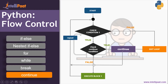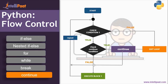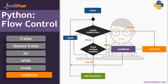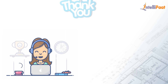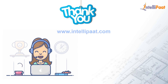Next we have the continue statement. The continue statement does not break the loop — it skips the current statement when the condition is true. Looking at the flowchart — start, check condition one. If true, check the continue condition. If false, execute the block and repeat. If the continue condition is true, stop executing that particular block for that iteration and go back to repeat and check the condition again. That's all for this session — if you have any doubts, you can reach out to Intellipaat 24/7 and we'll try to resolve your query as soon as possible.